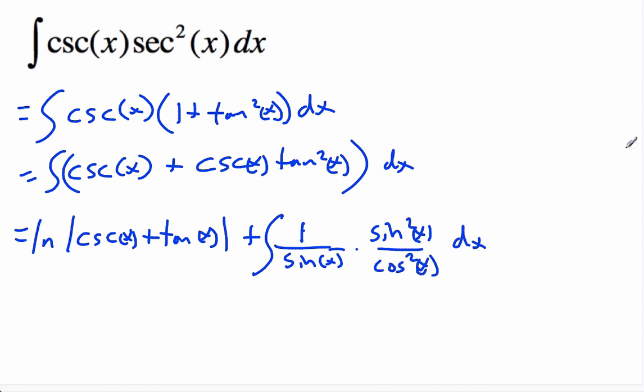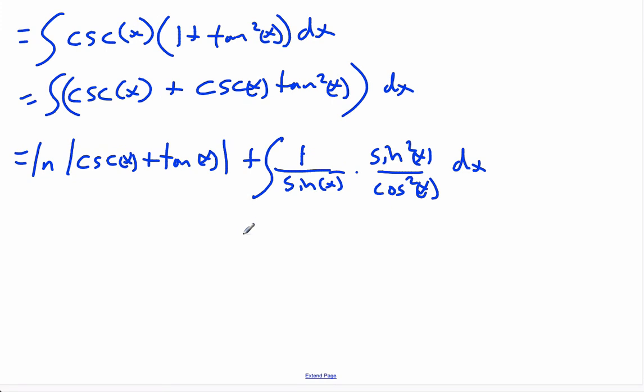Okay, so this becomes, some sines are going to cancel, and I'm going to rewrite it like this. It's going to be sine x over cosine x times 1 over cosine x dx.